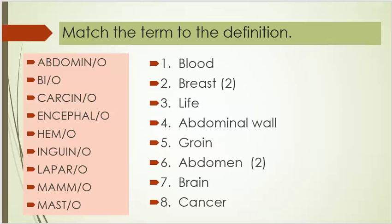The definitions: Number one, blood. Number two, breast — and this has two answers. Number three, life. Number four, abdominal wall. Number five, groin. Number six, abdomen — and again two answers.